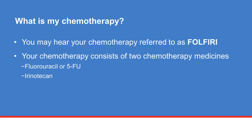Your chemotherapy, FOLFIRI, consists of two medicines. One is called fluorouracil, or 5-FU, and the other is called irinotecan. Your doctor may have mentioned giving you an additional drug called bevacizumab, or Avastin. We will discuss this targeted therapy at the end of the presentation.